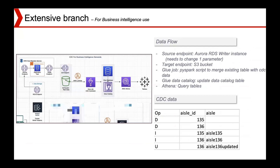Now let's look at our extensive branch, which is for the CDC process for business intelligence and data analysis purposes — it has nothing to do with the main branch. Starting from the left, we use the Data Migration Service to implement the CDC process.